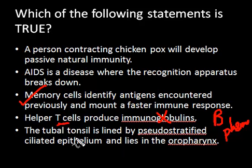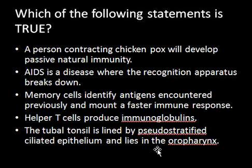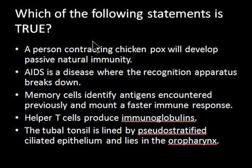And lastly, the tubal tonsil is lined by pseudostratified ciliated epithelium and lies in the oropharynx. The first part of the statement is correct, but the tubal tonsil does not lie in the oropharynx — it lies in the nasopharynx. Hence the importance of reading all statements very carefully. You must be able to identify where structures are lying. Most students make a mistake when they don't read the sentence carefully. So this finishes this critical thinking video.